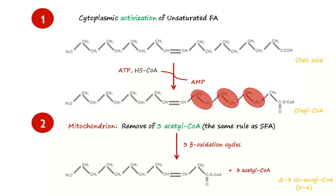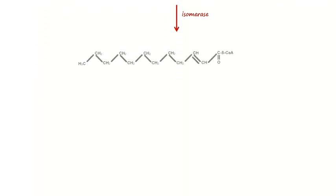In the third step, the isomerase enzyme will change the orientation of the double bond from cis into trans, because it favors the beta-oxidation reactions. The substance will be delta-2-trans-enoyl-CoA.